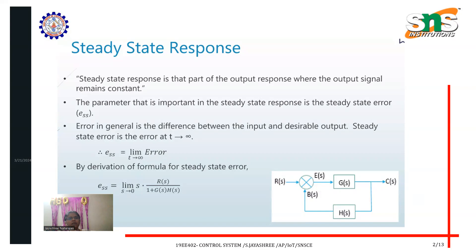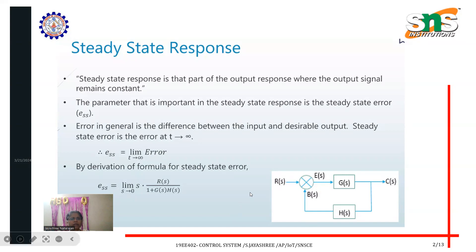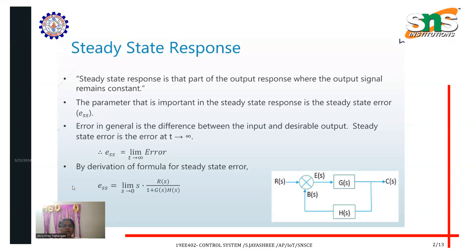An important parameter in steady state response is the steady state error, represented by e_ss. Error in general is the difference between the input and the desirable output. Steady state error is the error at time t equals infinity. The formula is: e_ss = lim(s→0) s·R(s) / (1 + G(s)·H(s)).